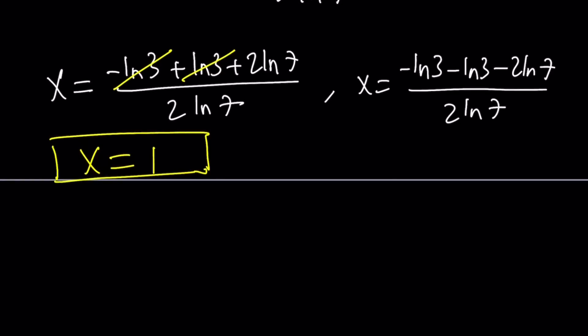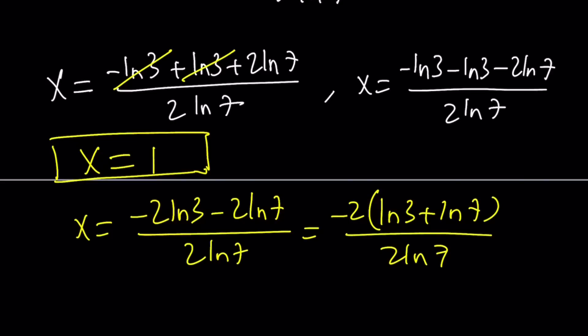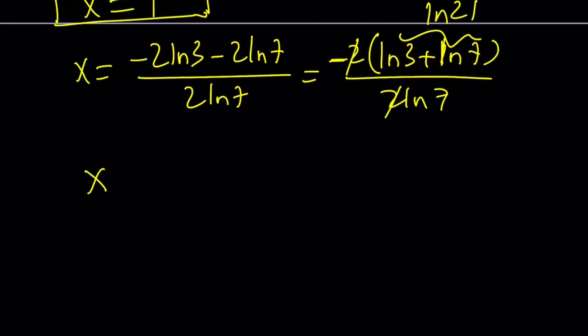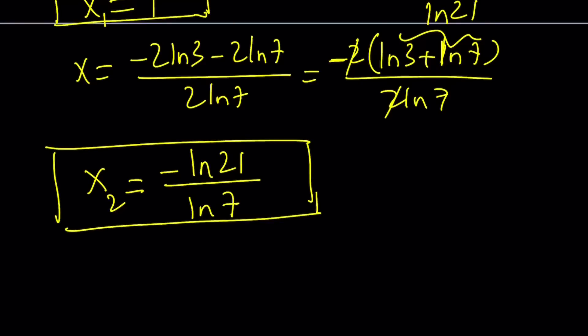But what about the other solution? For the other solution, we're going to manipulate this a little bit. This is negative 2 ln 3 minus 2 ln 7 over 2 ln 7. And now we can take out a negative 2 ln 3 plus ln 7 over 2 ln 7. Oopsies, that one is weird. And 2 and the 2 cancels out, leaving us a negative sign. But ln 3 plus ln 7 can be written as ln 21, remember? So from here we can write, let's call this x sub 1. x sub 2 can be written as negative ln 21 over ln 7. So we have two solutions because it's quadratic and they're different because discriminant is not 0.